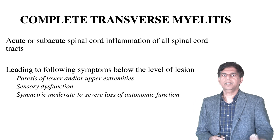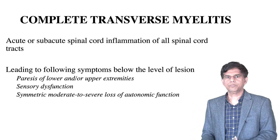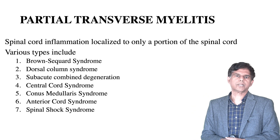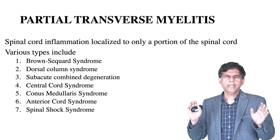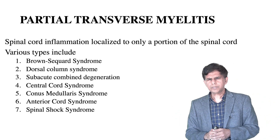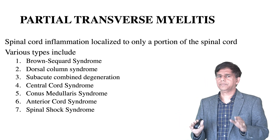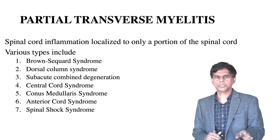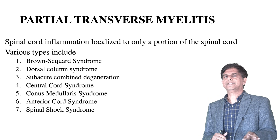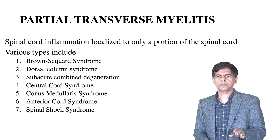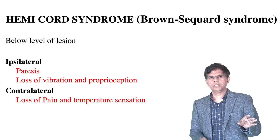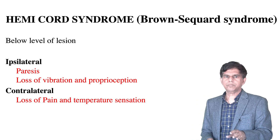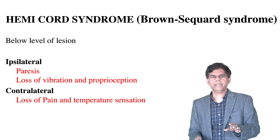Complete transverse myelitis involves acute or subacute spinal cord inflammation affecting all spinal cord tracts, leading to paresis, sensory dysfunction, symmetric loss of function, and autonomic dysfunction. Partial transverse myelitis involves only a portion of the spinal cord. Types include Brown-Séquard syndrome, dorsal cord syndrome, subacute combined degeneration, central cord syndrome, conus medullaris, anterior cord syndrome, and spinal shock syndrome.